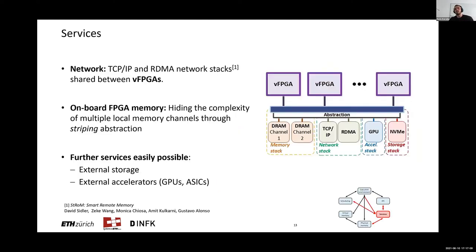One memory model we find interesting is the unified memory model, used quite often in GPUs. The idea is that from user logic in the VFPGA, you can access host memory directly, and you can also access data in local FPGA memory, which if not present is demand-paged from the host side. Importantly, this is hidden from the user — it's done in the background, removing the need for explicit memory management from users. The first services we integrate are 100G open source TCP/IP and RDMA network stacks. We also implement a memory stack abstraction using striping, which hides the complexity of multiple memory channels while preserving a simple one-channel interface to user logic and optimizing bandwidth across all available channels.